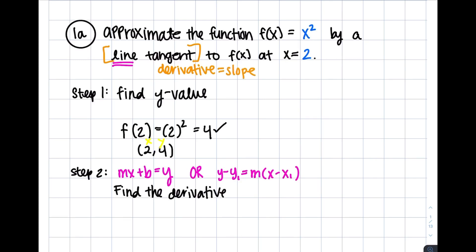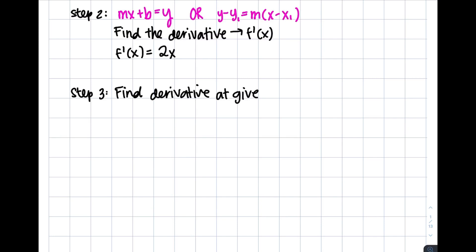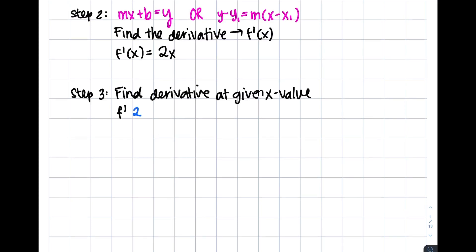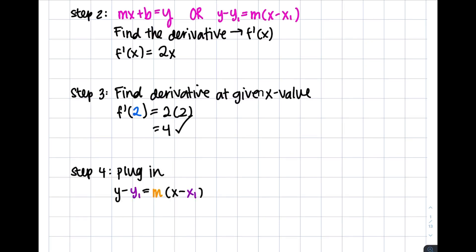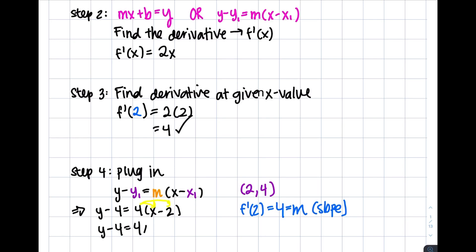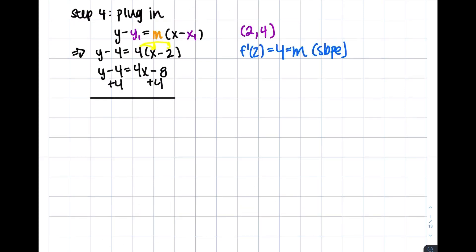Step 2 will be to find the derivative of f of x. Solving for that, we'll find that the derivative equals 2 times x. Now that we have our derivative formula, we'll want to find the derivative at our one point, so we'll plug in x equals 2 to get 4 — this is the slope at our one point. Our final step is to plug our variables into the line formula. We have our point (2, 4) and our slope 4. After simplifying with some algebra, we get y equals 4x minus 4, which is our final answer.